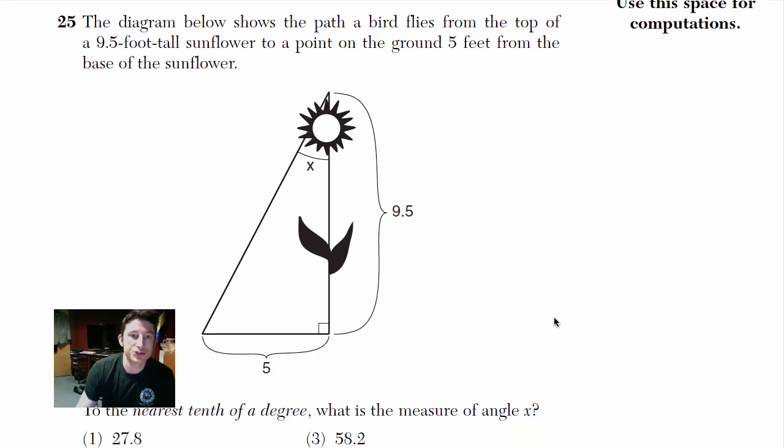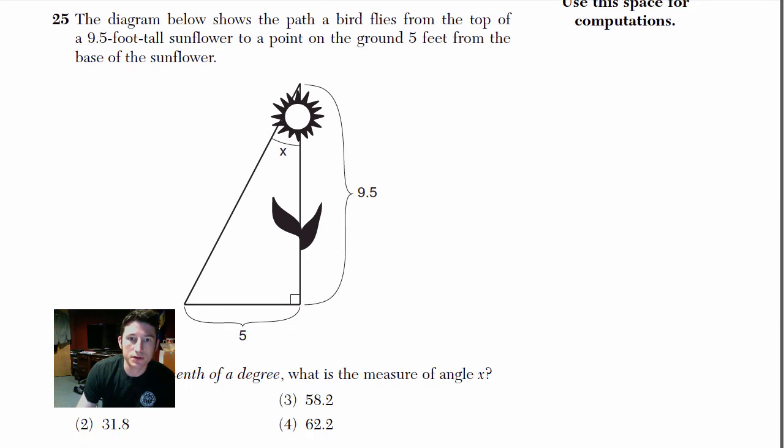Alright, looks like another gigantic flower. The diagram below shows the path a bird flies from the top of a 9.5 foot tall sunflower to a point on the ground five feet from the base of the flower. So that's this distance over here. It went from here all the way down there. Okay, let me move this out a little bit. Sorry, I just realized that you guys can't see everything. Okay.